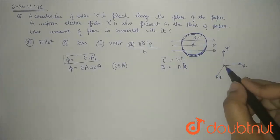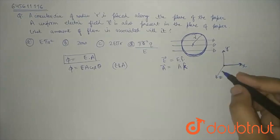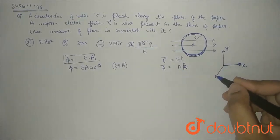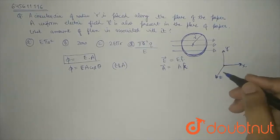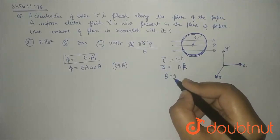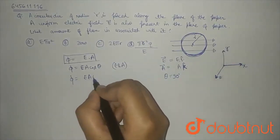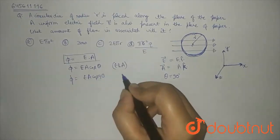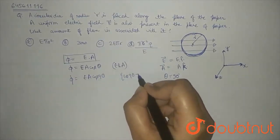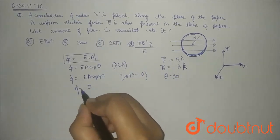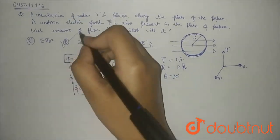So of course if E is in x direction and area vector is in z direction, we know that the angle is 90 degrees. So what is EA cos 90? We know cos 90 is 0, so flux is 0. So B is the answer.